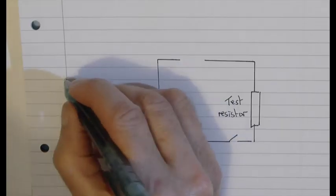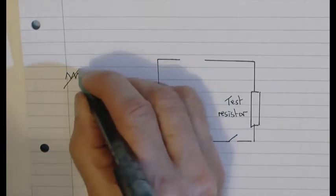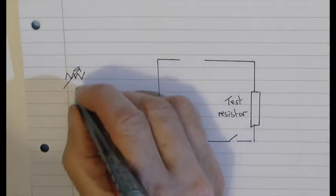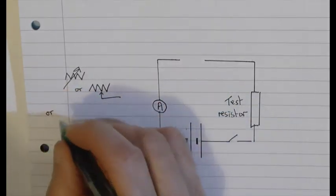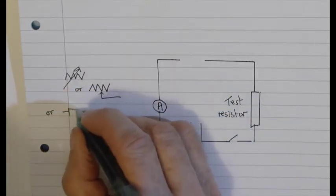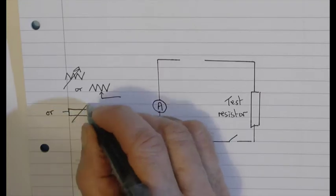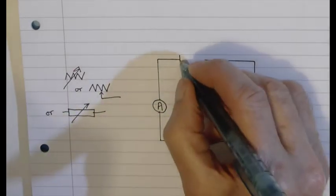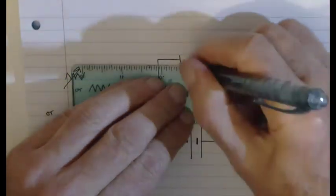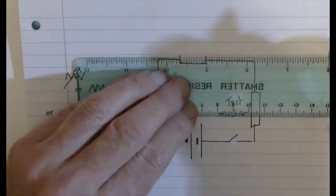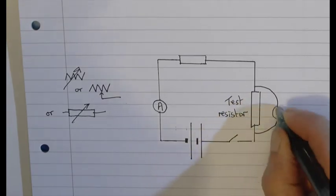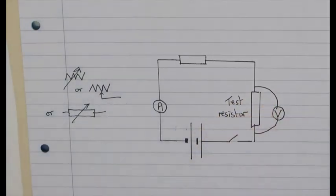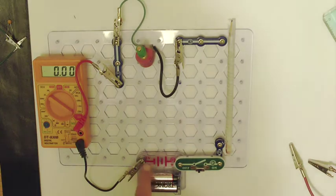Ohm's law is about how the current through a resistor changes when we change the potential difference. I'm going to use this circuit with a variable resistor included. Now the variable resistor is a bit like a tap. There are two or three possible symbols but what I'm going to use is the SI unit, the international unit, which is a box with an arrow through it. That is going to be altered to change the potential difference across the test resistor. We're measuring the potential difference across the test resistor as well as the current through it.